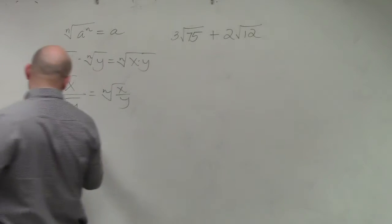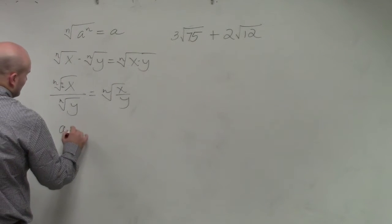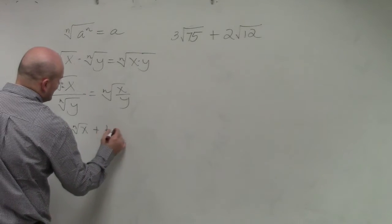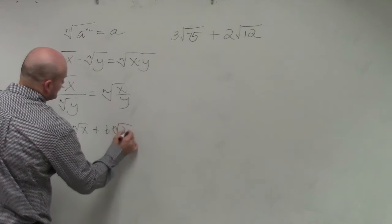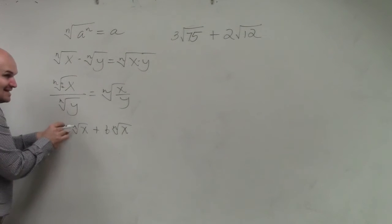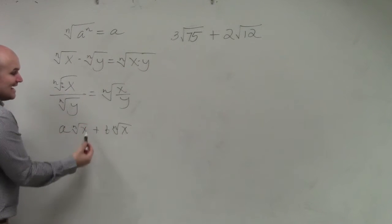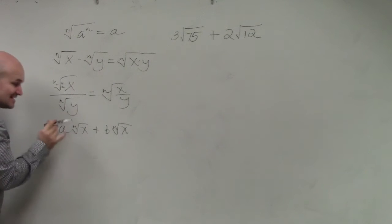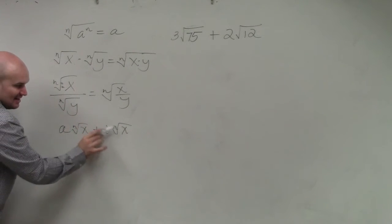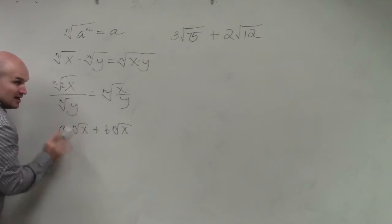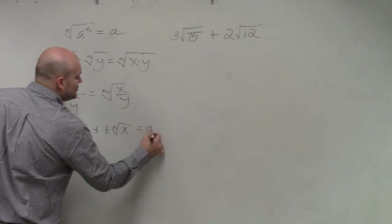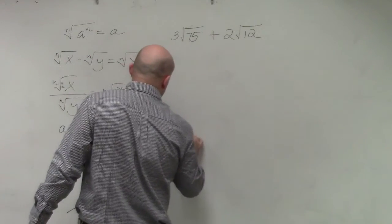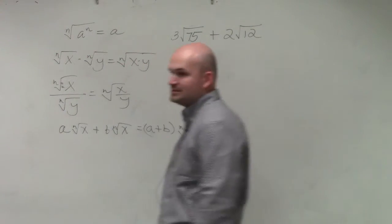So basically, ladies and gentlemen, if you have a nth root of x plus b nth root of x, as long as your index and your radicand are exactly the same, then you can add the coefficients and you keep the index and radicand exactly the same.